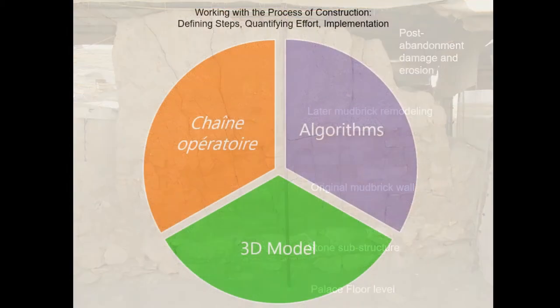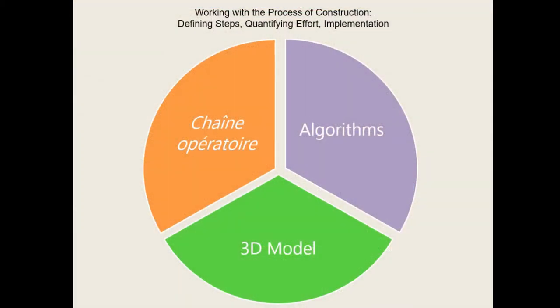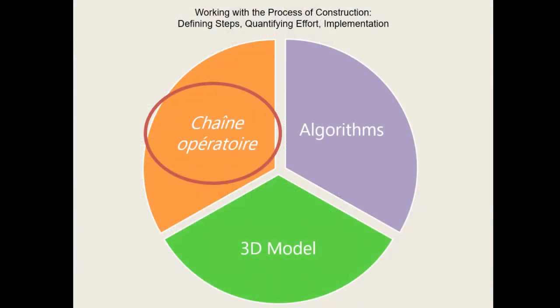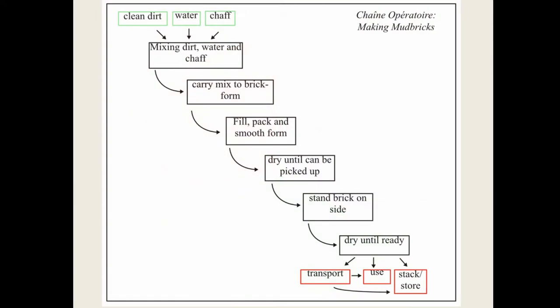How do we go from this to understanding the process of construction? My technique — my suggestion — is threefold: a combination of three factors, a chain of algorithms, and a 3D model. Let's take just one example of one element in the structure we saw before: the mud brick.